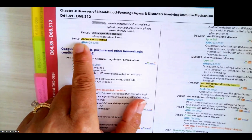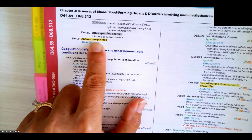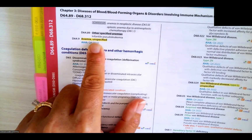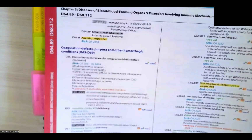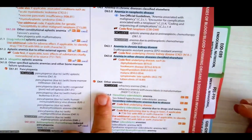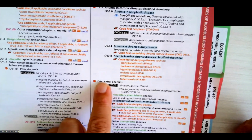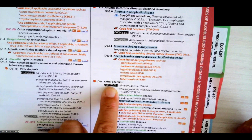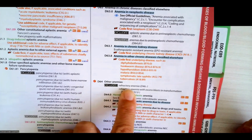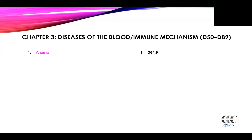Here we are at D64.9, where the alphabetic index led us, and we have anemia unspecified, which is exactly our documentation because we don't have anything further. I always like to go back at least to the category level and see if there are any instructional notes. We do have an instructional note here that says excludes one — so this is anything in category D64 — we have excludes one refractory anemia, which is category D46. So D64.9 is the correct code for anemia not otherwise specified.